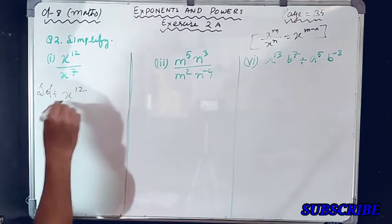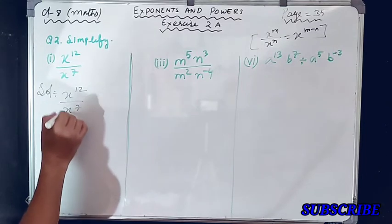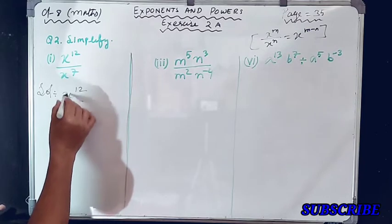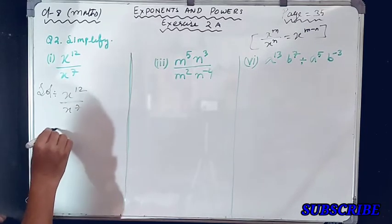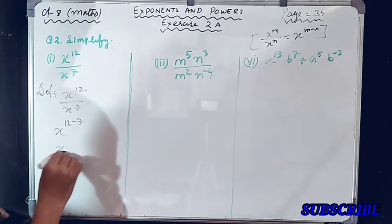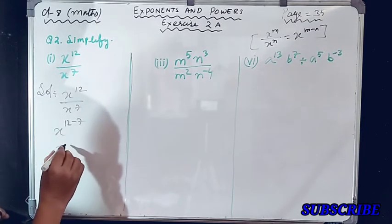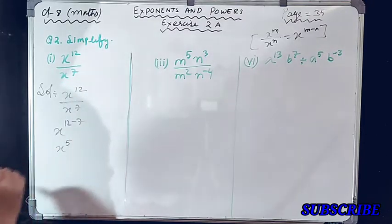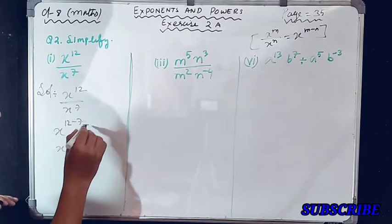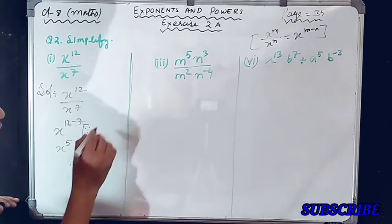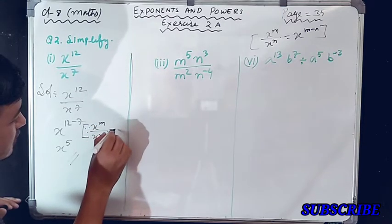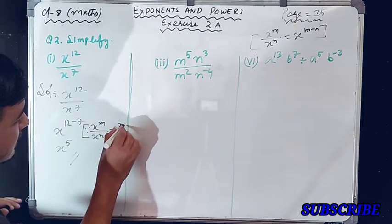First we have x raised to the power 12 divided by x raised to the power 7. The bases are same and they are in division, so simply we will subtract the exponents: 12 minus 7 gives us 5. So x raised to the power 5 is your answer. Write the law used: x^m divided by x^n is equal to x^(m minus n).